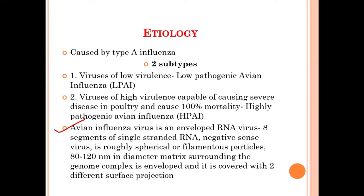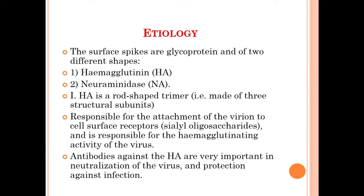The avian influenza virus is an enveloped RNA virus with 8 segments of single-stranded negative-sense RNA. It has a roughly spherical or filamentous particle with a diameter of 80 to 120 nanometers. The matrix surrounding the genome complex is enveloped and covered with two different surface projections.